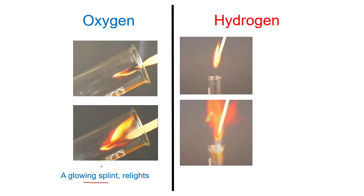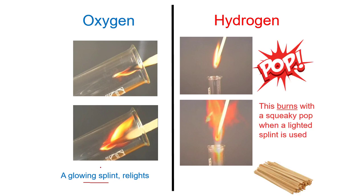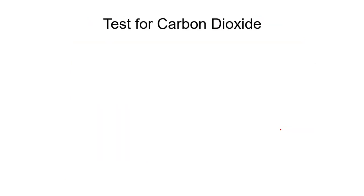Then we have hydrogen gas. Hydrogen gas can burn, so the test for hydrogen is by using a lighted splint. Please take care: for hydrogen we use a lighted splint, but for oxygen we use a glowing splint. Hydrogen burns with a squeaky pop sound — you need to mention this in your answers.